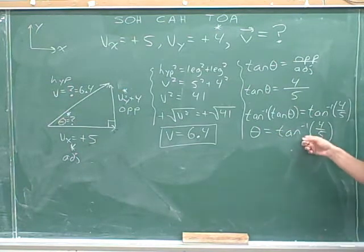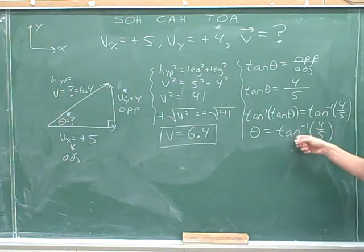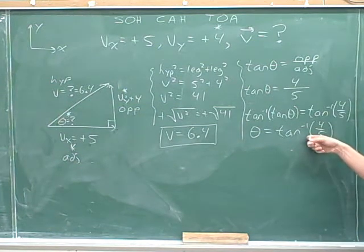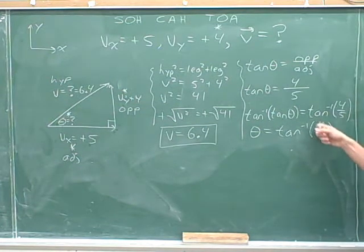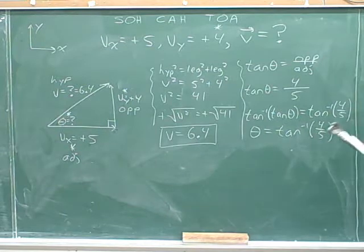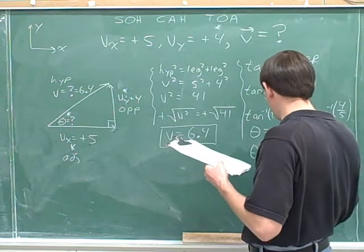All right, now we can figure this out in one step on your calculator. You don't need to split this up into separate steps. Do the inverse tangent. If your calculator doesn't put this parenthesis in, you have to put it in yourself to indicate that there's two things involved in the inverse tangent. And then you can do this all in one step. And on your calculator, you should get that theta comes out to be 39 degrees.